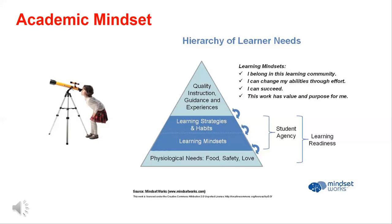These three things — physiological needs, safety, and love — are absolute. We need them, we can't disregard them, and we must start with them. We want to make sure students have a nice foundation with these physiological needs so that they can then move up to a learning mindset.